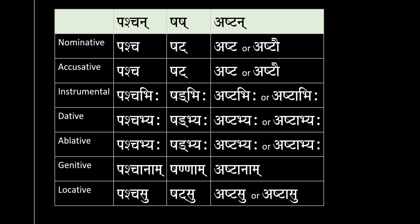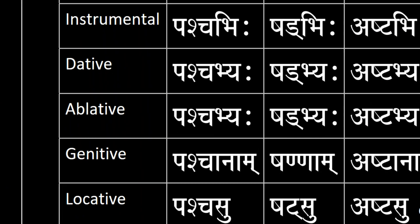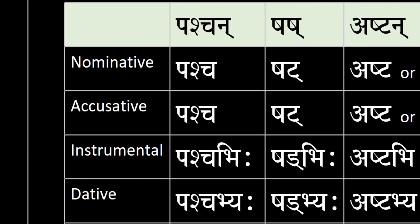So let us go over the declension of Pañcan. From Nominative going all the way down to Locative, we have: Pañca (Nominative), Pañca (Accusative), Pañcabhihi (Instrumental), Pañcabhyaha (Dative), Pañcabhyaha (Ablative), Pañcanam (Genitive), and Pañcasu (Locative). That is the declension for number 5.